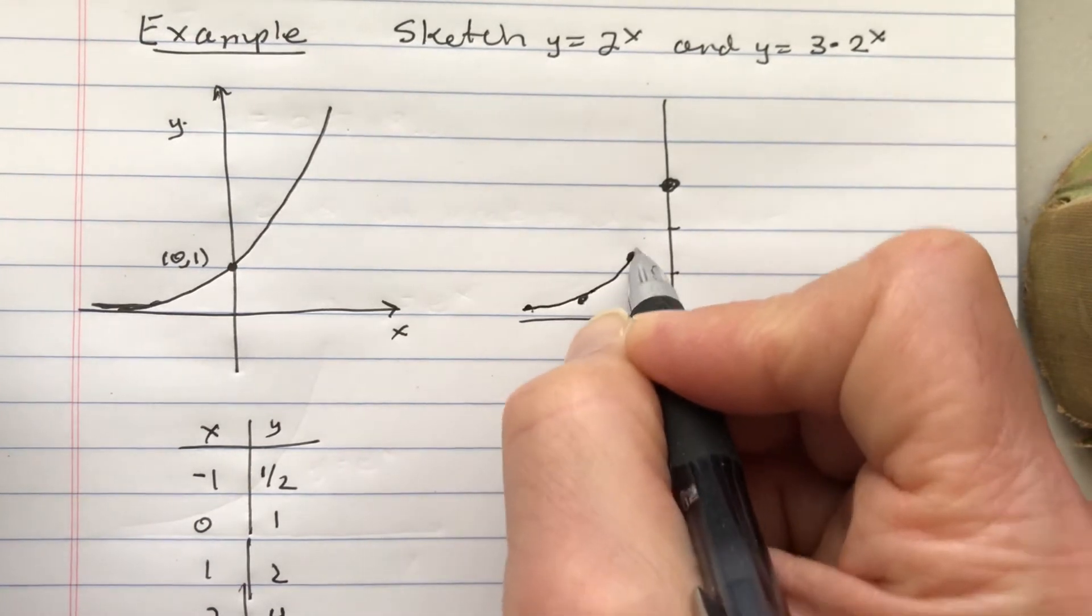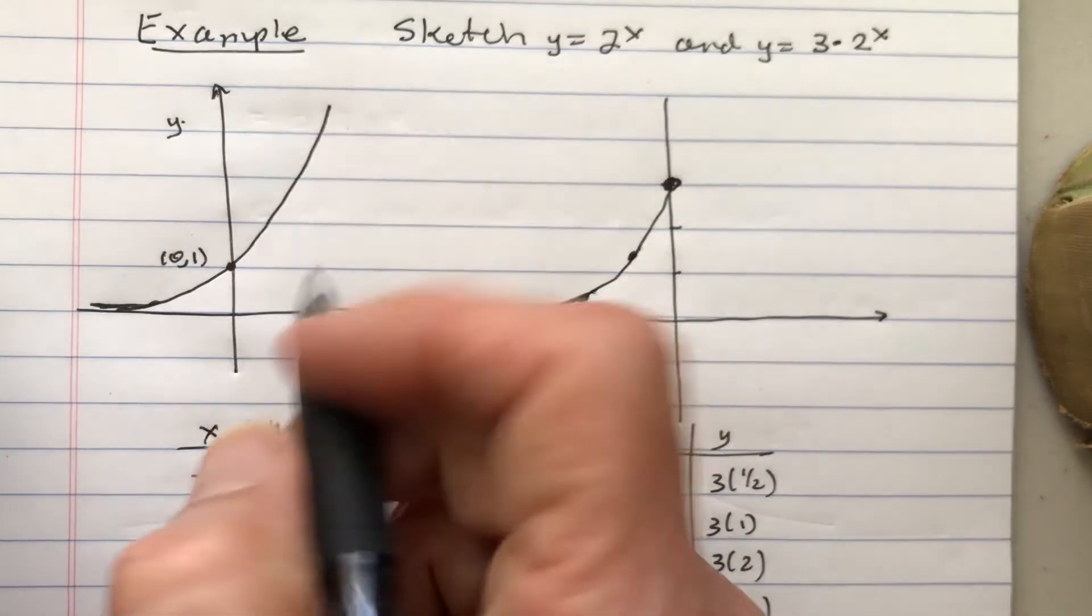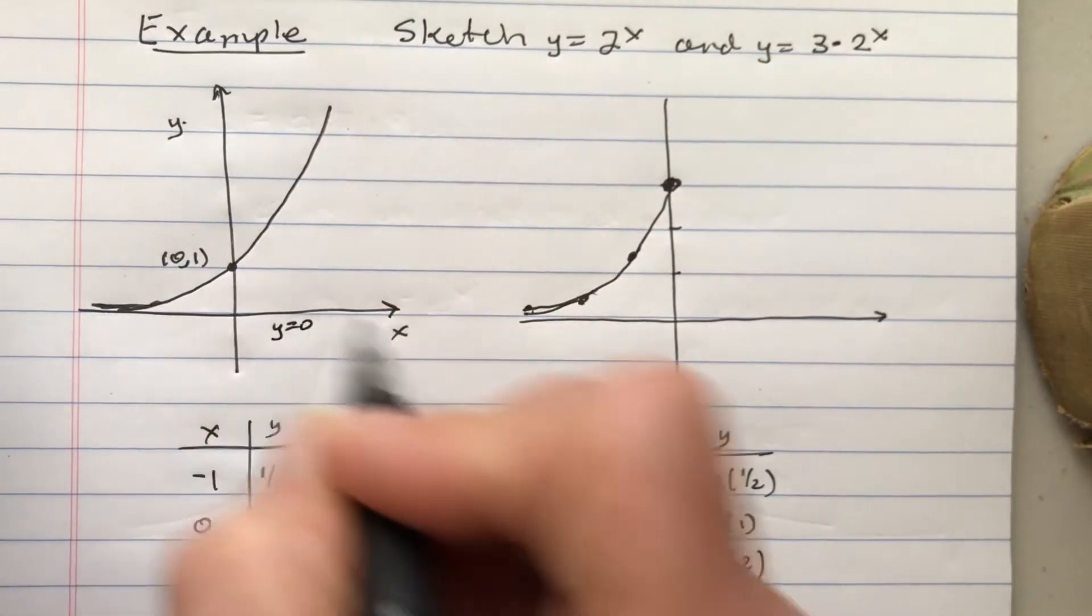So multiplying by 3 does not shift the function. It multiplies all these numbers by 3.